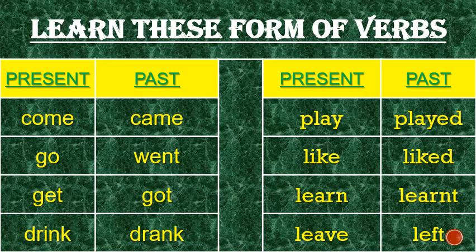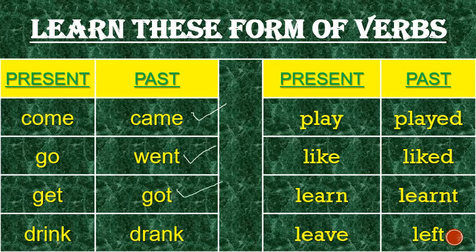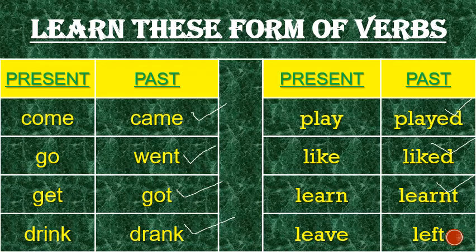Learn these forms of verbs — present and past: come/came, go/went, get/got, drink/drank, play/played, like/liked, learn/learnt, leave/left.